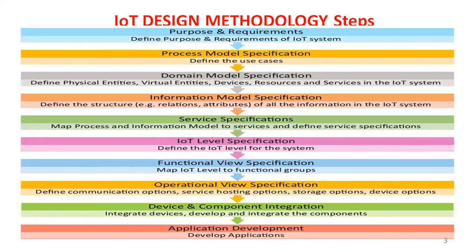Level three also uses cloud-based storage and cloud-based applications, with some additional information. Similarly, level four, level five, and level six have different configurations. In the IoT level specification, you define which IoT level applies to your system.